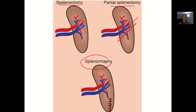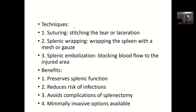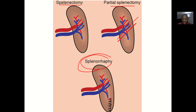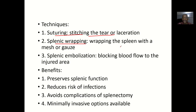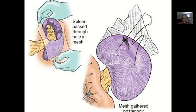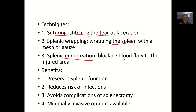Techniques for splenorrhaphy include suturing, where you stitch the tear or laceration — you can see the knitting pattern in the image. There is also splenic wrapping, where you wrap the spleen with a mesh or gauze. Finally, splenic embolization involves blocking blood flow to the injured areas of the spleen by occluding the blood vessels so that blood does not flow to the damaged part.